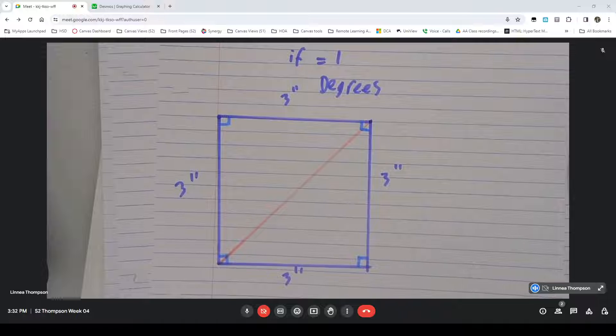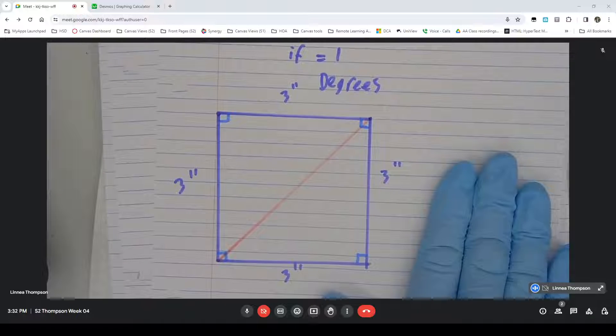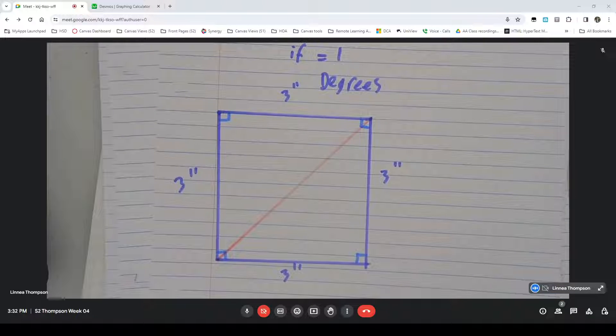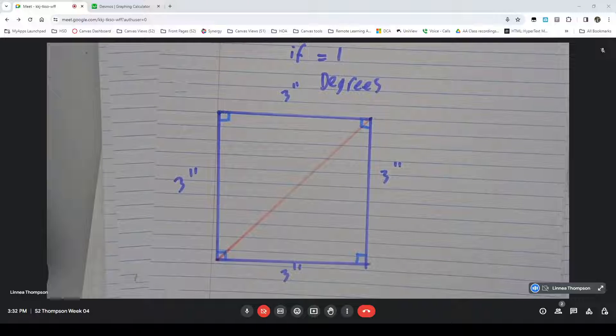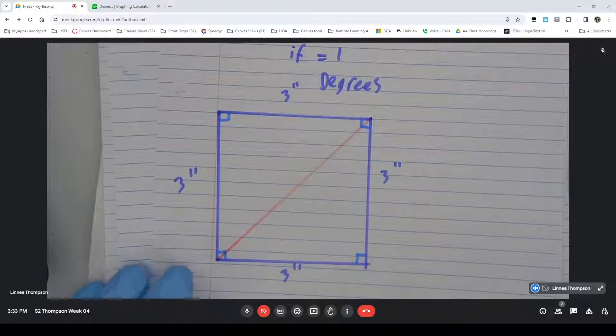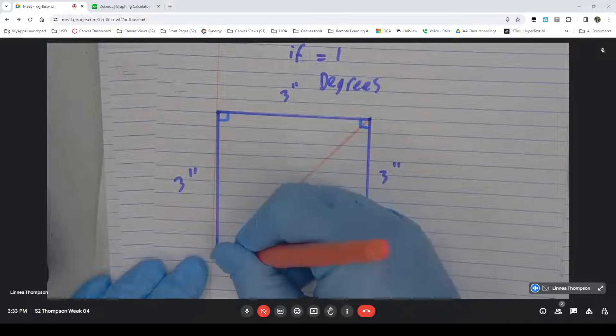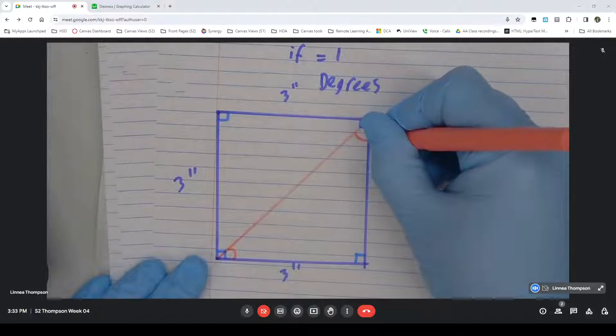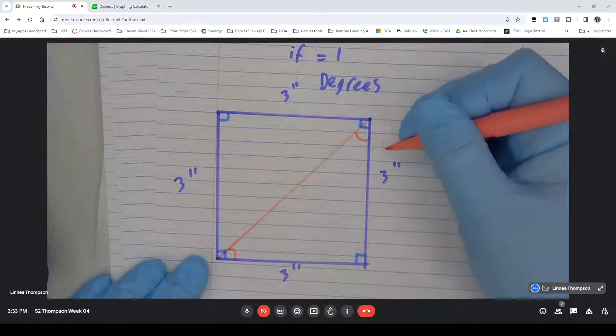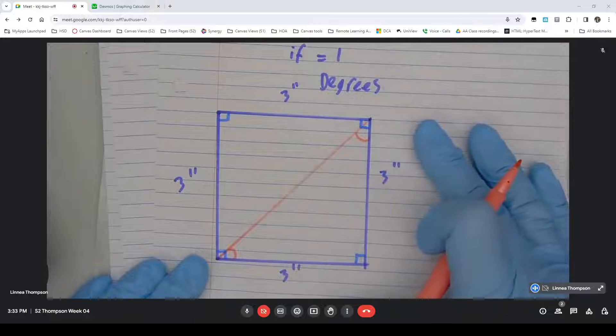We know because these legs are the same that this is an isosceles triangle. And in an isosceles triangle, the base angles are equal. So I know this angle and this angle have to be the same because it's an isosceles triangle.